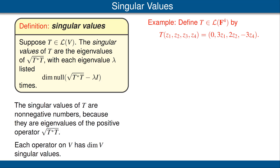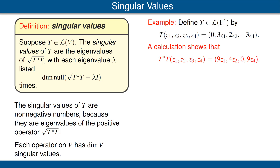Examples always help to understand what's going on, so let's look at an example. Define T to be the operator on F4 shown here, where F4 is the inner product space with the standard inner product. A calculation shows that T*T is the operator shown here. You should stop the video and do this calculation — either using the definition of T* or using matrices: write out the matrix of T, then its conjugate transpose, and do the matrix multiplication. Notice that T*T, with respect to the standard basis of F4, has a diagonal matrix with entries 9, 4, 0, and 9 along the diagonal.